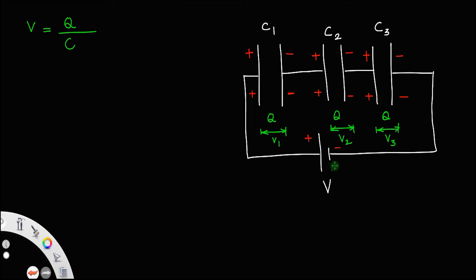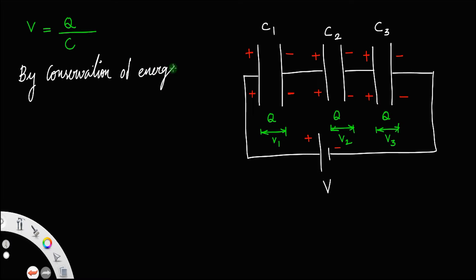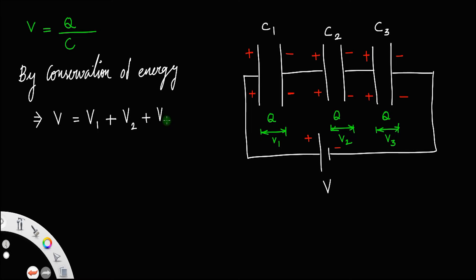From the law of conservation of energy, potential is equal to work done per unit charge, that is energy per unit charge. By conservation of energy, the total potential drop V across the cell is equal to the sum of the potential drops across the individual capacitors: V = V1 + V2 + V3.